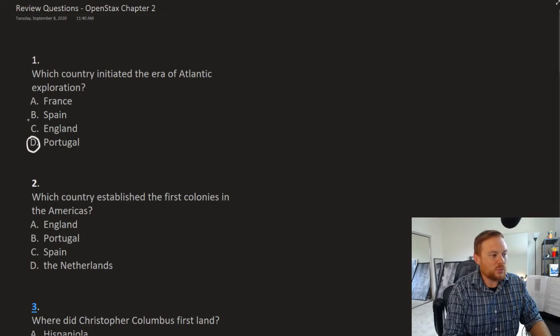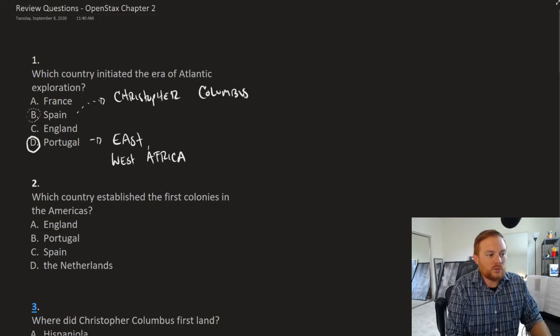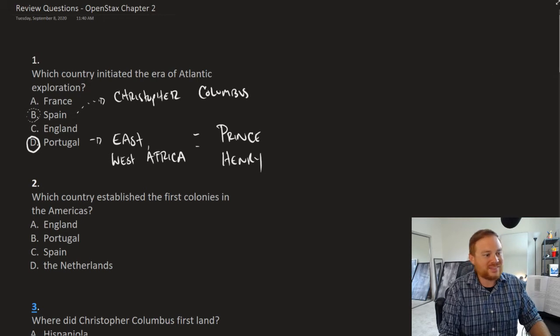You might think that it was Spain, but that is not the case. Portugal was interested in trading East, established trading routes in West Africa, and it was only later that Spain came into the picture with Christopher Columbus. A person who predates and is associated with Portuguese exploration is Prince Henry, sometimes called Prince Henry the Navigator, one of the early sponsors of exploration in Europe. So the correct answer is D, Portugal.